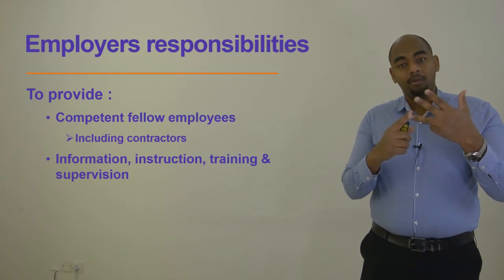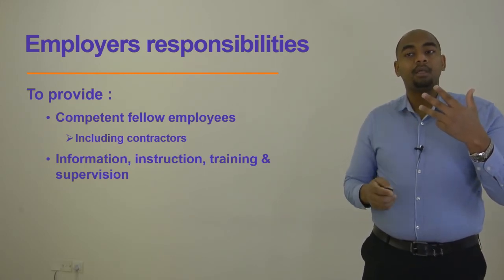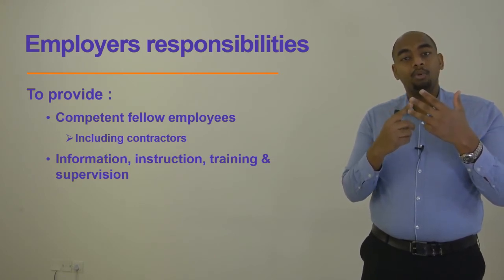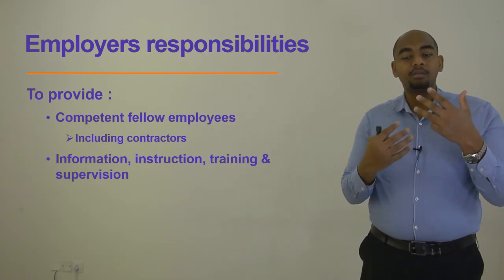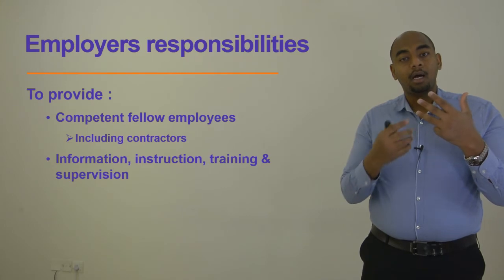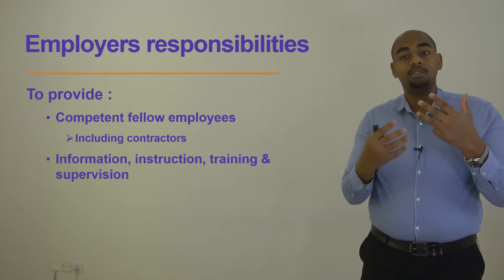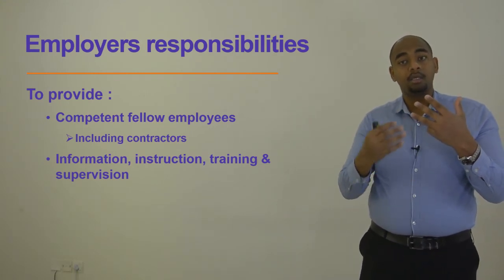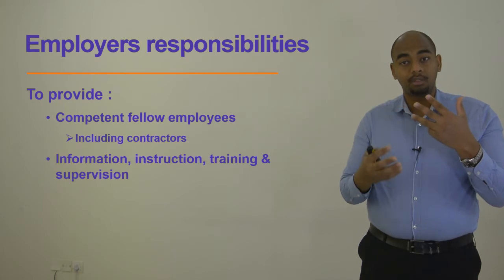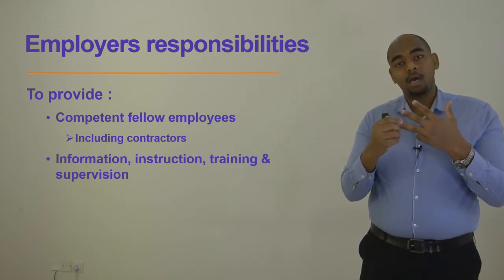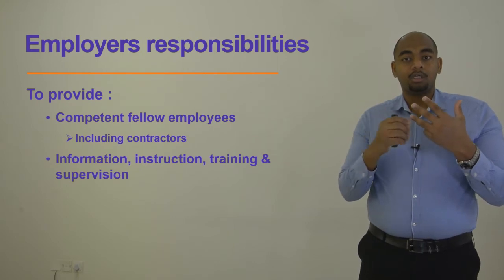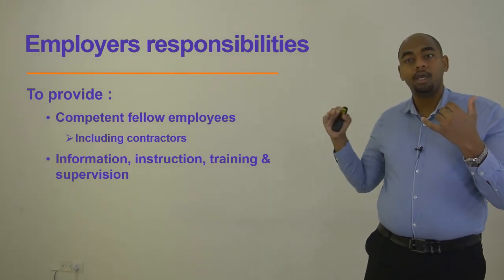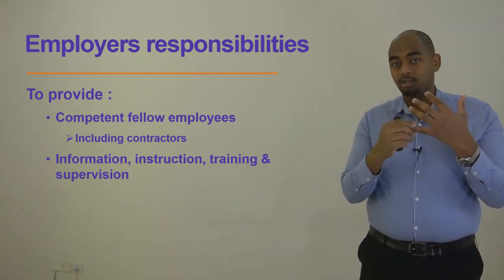The fourth responsibility is competent employees. The employer must ensure that employees are competent enough by providing sufficient training and good supervision for them. Also, whenever a contractor is introduced to the workplace, the employer must ensure those contractors are competent enough and know how to deal with hazards and risks within the work location. The last responsibility is information, instruction, training, and supervision.